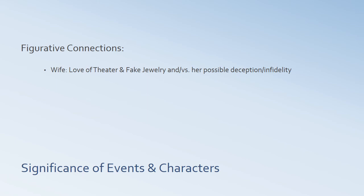There's also a figurative or symbolic connection. The wife loves theater and fake jewelry — or what we think is fake jewelry — and she has possibly been deceiving her husband, possibly unfaithful. Think about the symbolic connections: jewelry that is fake is something very beautiful that appears to have great value but is in fact not valuable — it's false, it's untrue. And think about theater: what do people do in the theater? They act, they pretend, they pretend to be people they are not. So the wife's love of theater and fake jewelry may figuratively signal her infidelity or that aspect of her character.